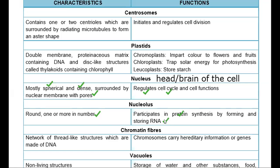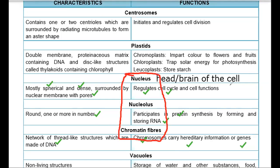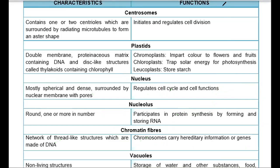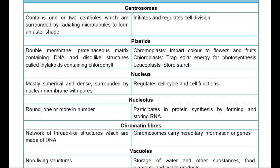Chromatin fibers are a network of thread-like structures made up of DNA. They carry hereditary information and genes. So within the nucleus, the nucleolus and chromatin fibers together regulate the cell cycle.